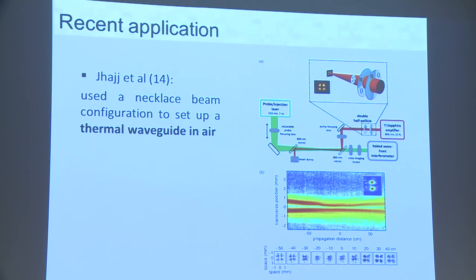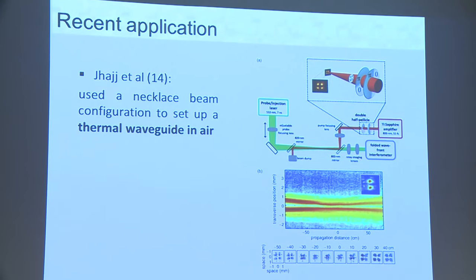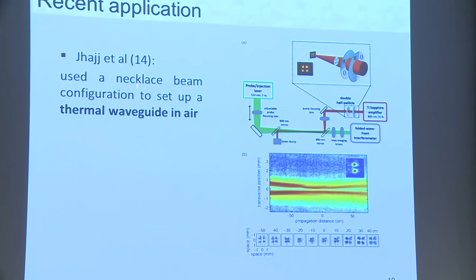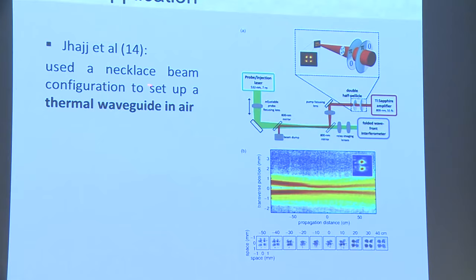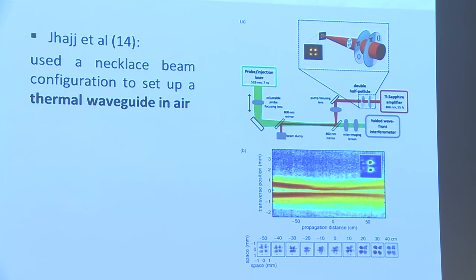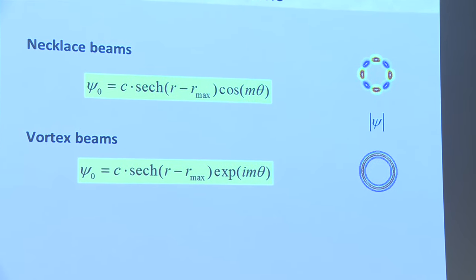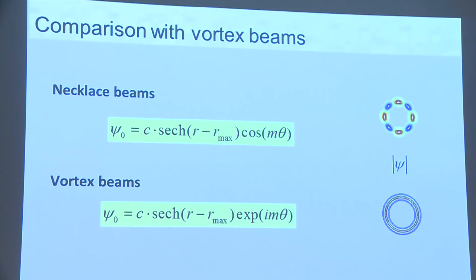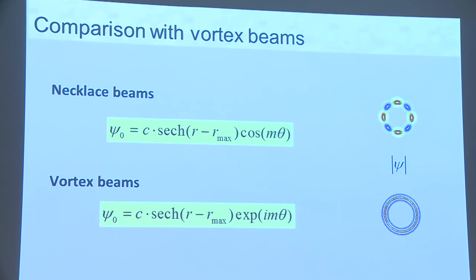This necklace structure is actually being used as a means, not just an end — for example, in a recent paper they set up a necklace beam structure to create a thermal waveguide in air. Note that a necklace beam is not a vortex beam; a vortex beam is proportional to e^{im theta} and has a radial amplitude, whereas the necklace beam is non-radial — they are different.